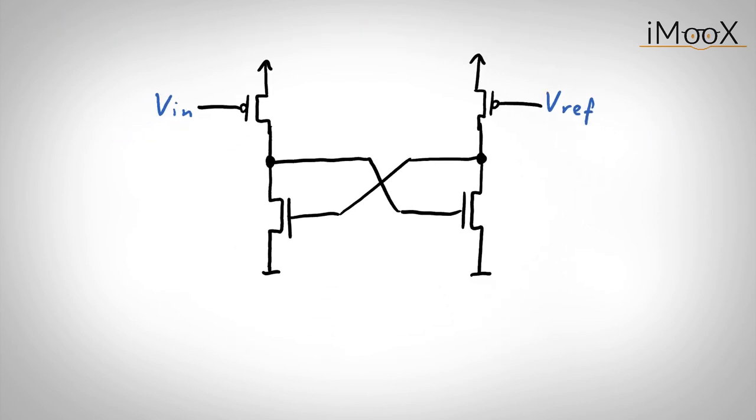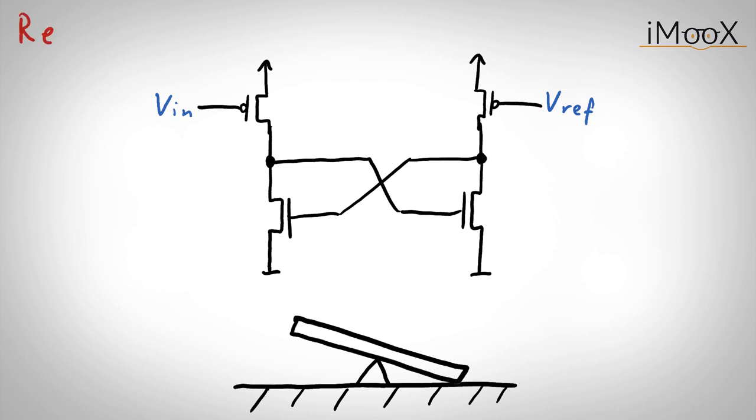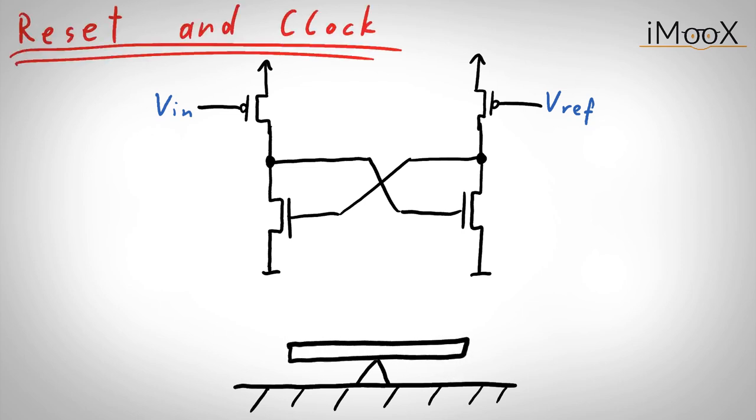Until now, we assumed that we always started at the instable equilibrium point and waited for the latch to fall into one of the stable equilibria. Assuming the latch is already flipped, we want to make it flip or let's call it flop into the other state. We cannot reliably flop or switch it back only by changing Vin. For this reason, we need to implement a reset mechanism to put the circuit back into the unstable equilibrium point.